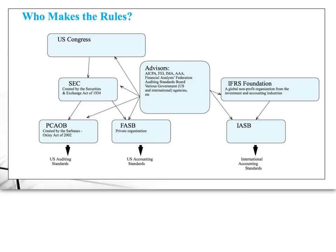Now let's talk about who makes the rules. The organization that has been around the longest in the U.S. is the Financial Accounting Standards Board. It is the rule-making body. It is nominally a private organization — not created by government mandate. But the only reason anybody cares about FASB is because the Securities and Exchange Commission, created by Congress in the 1930s to oversee all financial markets in the U.S., says you will adopt FASB standards in the preparation of financial statements in order to be a listed company in the U.S. That's where the power of FASB comes from.